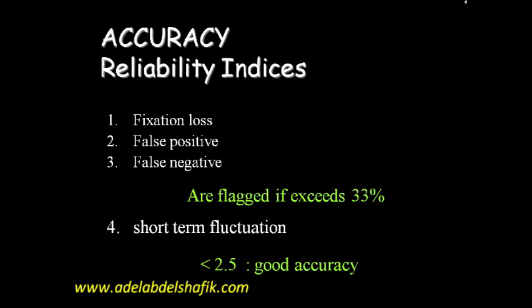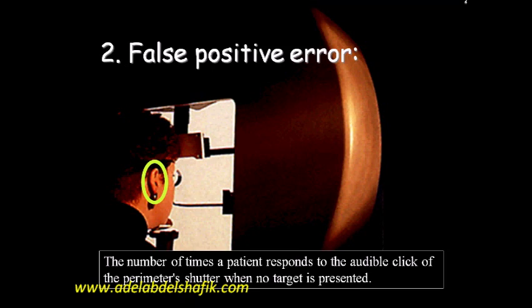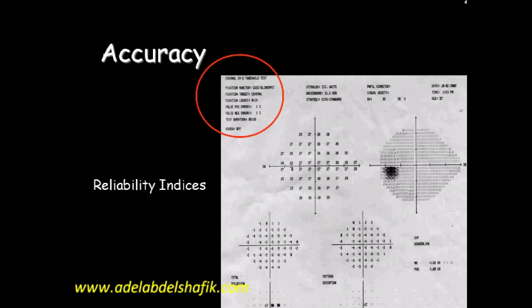So any of these three factors — fixation losses, false positive, and false negative — should be less than one-third in order to confirm that the test is reliable. In this part of the printout, you will find these three factors.